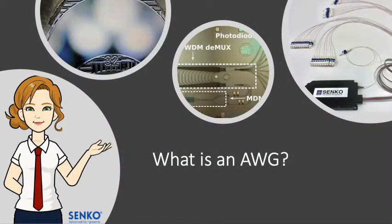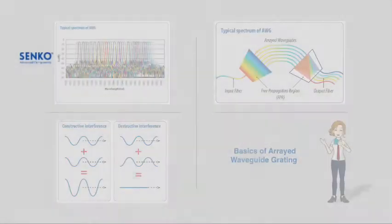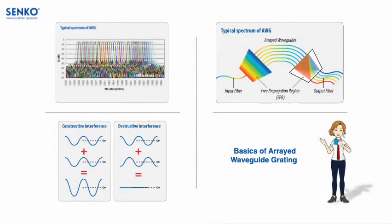The white paper begins by introducing the basics of the AWG component. This will include information such as what it is made of, how it is made, and what the underlying principles of operation are.